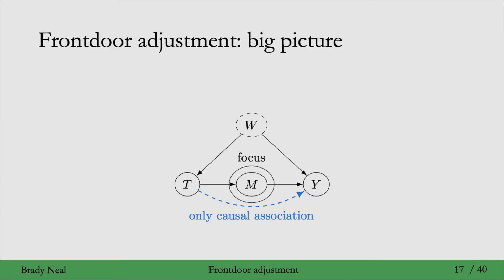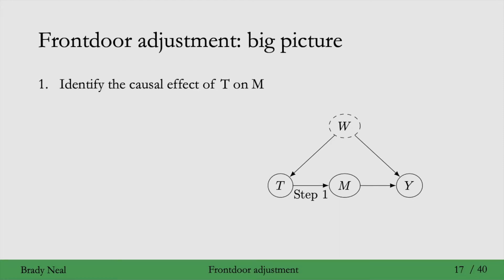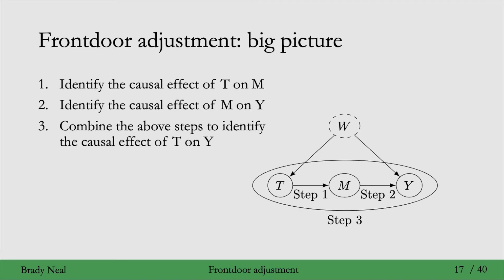We'll see specifically how we'll do that in this part of the lecture. The big picture is that we'll do this in three steps. The first step is to identify the causal effect of T on M. Then we want to identify the causal effect of M on Y. And finally, we'll combine these two to identify the causal effect of T on Y.